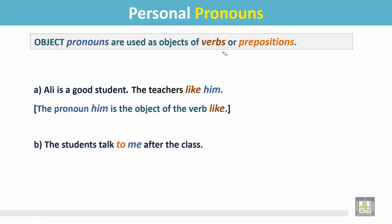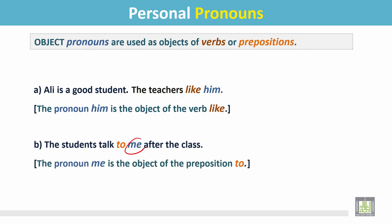Number B: 'The students talk to me after the class.' In this sentence, the pronoun 'me' is the object of the preposition 'to.'